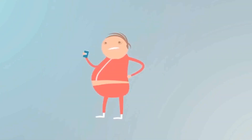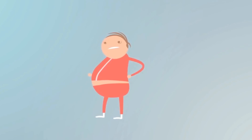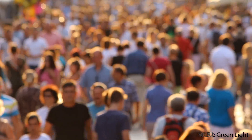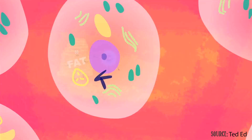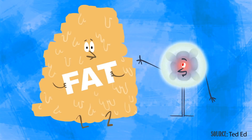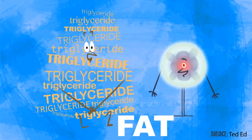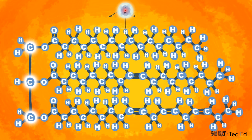Fats are often distinguished as the soft flesh on the bodies of people and animals. However, this term is different in this subject. Fats, also known as triacylglycerol, are constructed by joining a glycerol unit to three fatty acids by dehydration reactions.